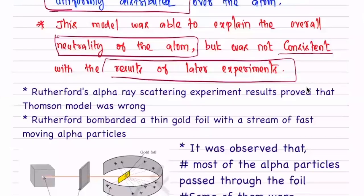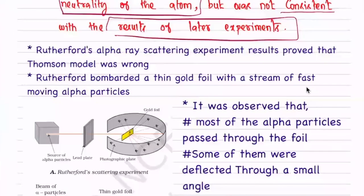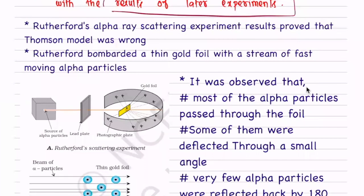Rutherford performed the alpha-ray scattering experiment. What did Thomson do? He proposed the plum pudding model. Later, Rutherford did his experiment and the results proved that Thomson's model was wrong. So what is the alpha-ray scattering experiment?